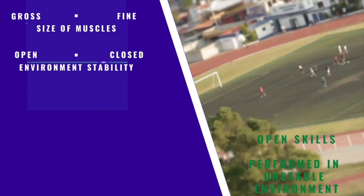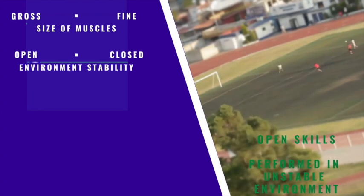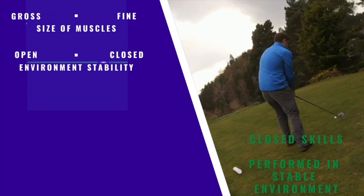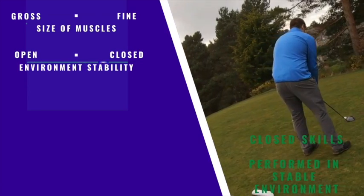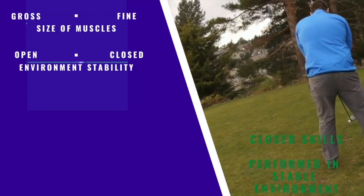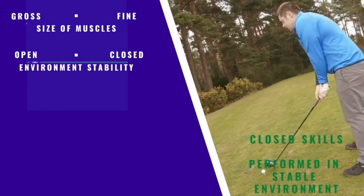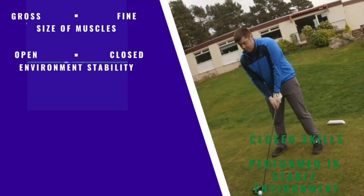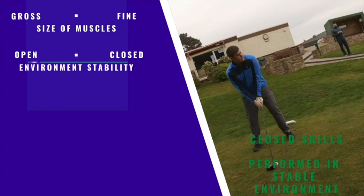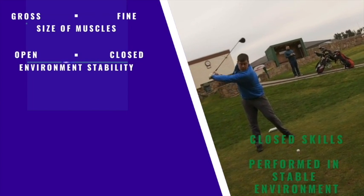The next continuum is environmental stability — open on one side, closed on the other. An open skill is performed in an unstable environment: there might be wind, there might be opponents, and you don't really dictate the skill. Whereas a closed skill is performed in a very stable environment where you can set yourself before you play. A golf shot is a fantastic example — you get time to decide when you're ready, choose your club, and try to mimic exactly how you've practised on the driving range.